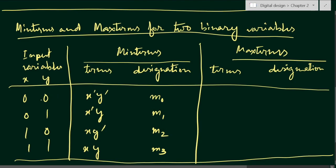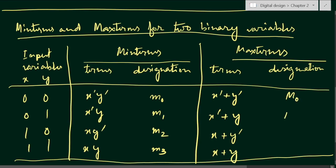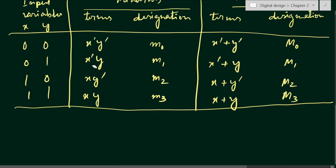Now the maxterms use the OR operation. For 00, the maxterm is x bar plus y bar. For 01, it is x bar plus y. For 10, it is x plus y bar. For 11, it is x plus y. These are designated with capital M: M0, M1, M2, M3. Each of these maxterms and minterms are called standard terms or standard forms — the minterms are standard products and the maxterms are standard sums.